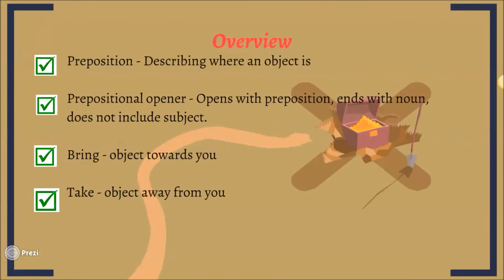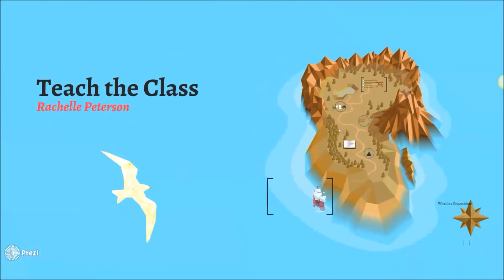Okay, so now a little overview. Preposition is describing where an object is. Prepositional opener opens with a preposition, ends with a noun, and does not include the subject. Bring is an object towards you and take is an object away from you. That's my teach the class project.